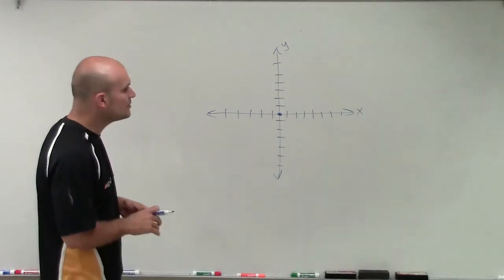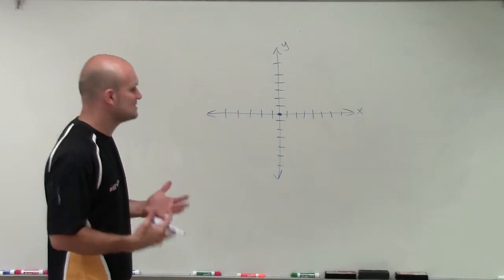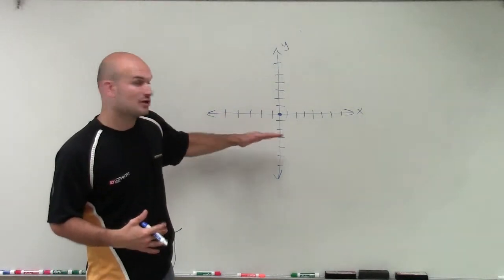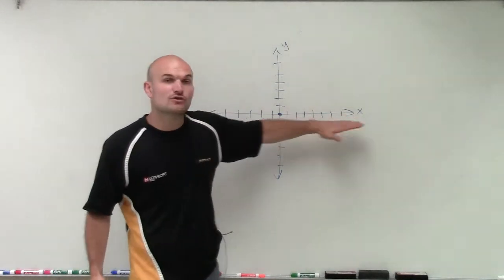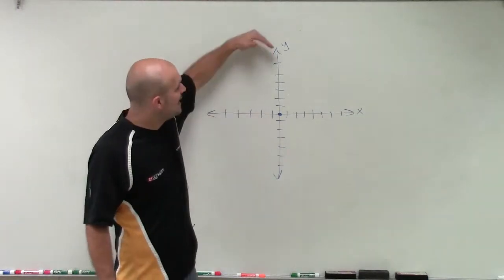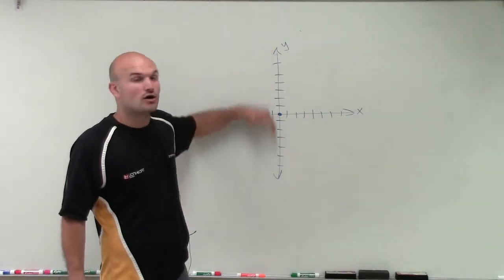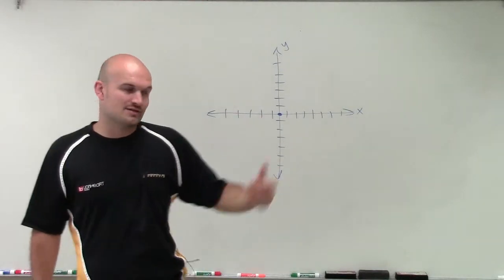Now, when dealing with x and y intercepts, the x-intercept of a linear graph is wherever my line is going to cross my x-axis. And wherever my line is going to cross my y-axis is going to be what we call our y-intercept.